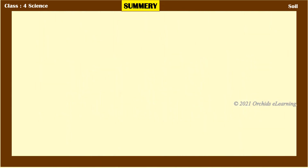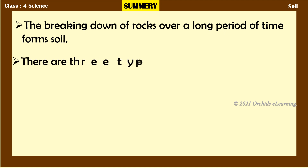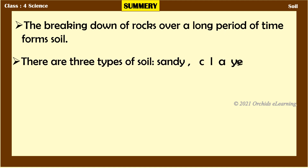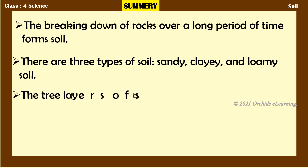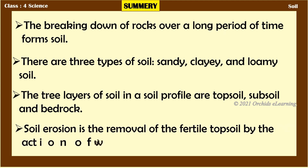Summary: The breaking down of rocks over a long period of time forms soil. There are three types of soil — sandy, clayey, and loamy. The three layers of soil in a soil profile are topsoil, subsoil, and bedrock. Soil erosion is the removal of the fertile topsoil by the action of wind and water.